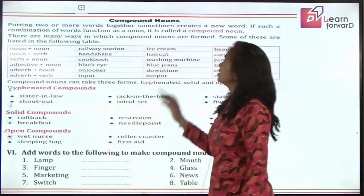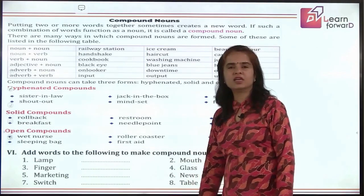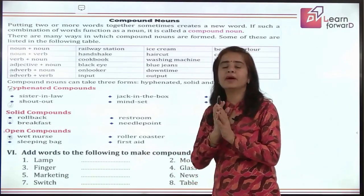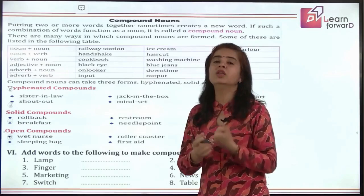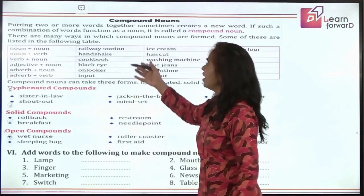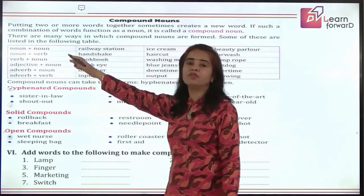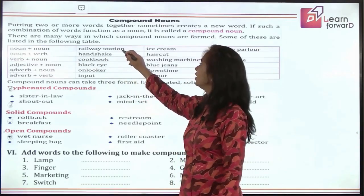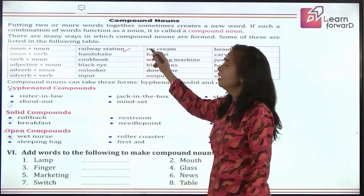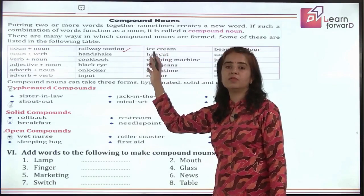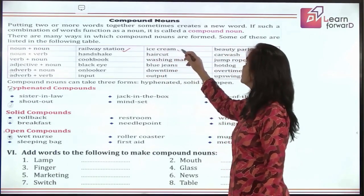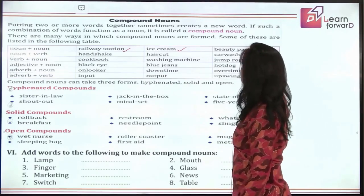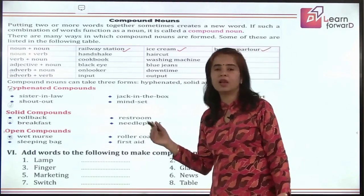Moving to the next topic: compound nouns. We have studied these before — compound nouns are formed when we combine words to make a new word. For example, noun plus noun: 'railway' and 'station' are both nouns, giving us 'railway station'. 'Ice' and 'cream' give us 'ice cream'. 'Beauty' and 'parlor' give us 'beauty parlor' — a different name, a new word.